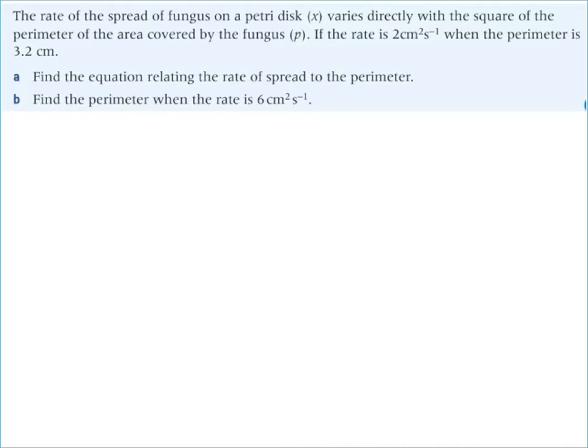It's saying that the rate of spread, which is X, varies directly with the square of the perimeter, which is P. That's saying that X varies directly with the square of the perimeter. If X is directly proportional to P squared, that means X equals some constant, you can use a or K or C or whatever you feel like, times P squared.